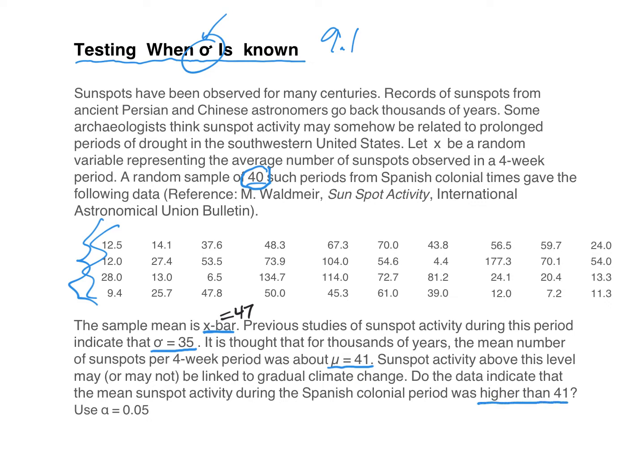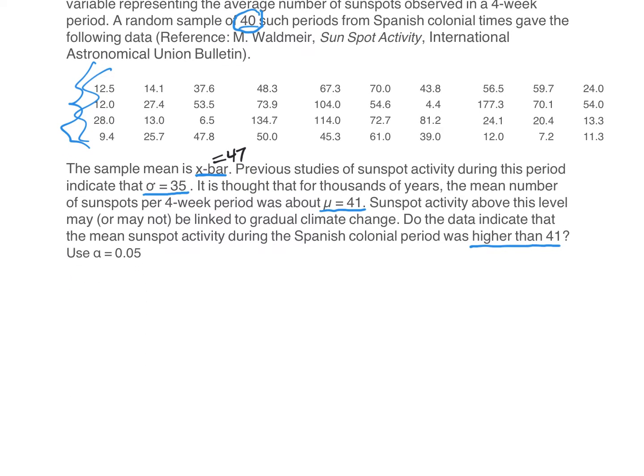So knowing that it's higher, we know that we're going to have a greater than problem. It's going to be a one-tail test. More specifically, a right-tail test. And we're using a level of significance of 0.05. So that's called a 5% level of significance. So let's do our null hypothesis. Mu is equal to 41. So we're saying there's an average of 41 sunspots. The alternate hypothesis is mu is, remember, higher than means greater than, greater than 41.